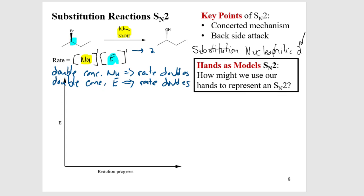The energy diagram for an SN2 reaction shows a starting material, a transition state — a high energy point you must overcome as the two molecules push through electron cloud repulsion — and then a product. No intermediate, just one transition state to get from point A to point B. It's a one-step concerted reaction.